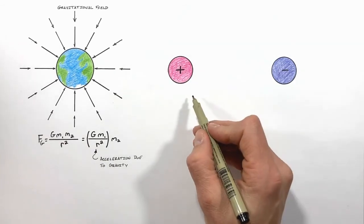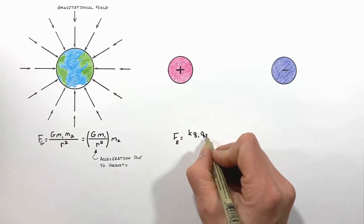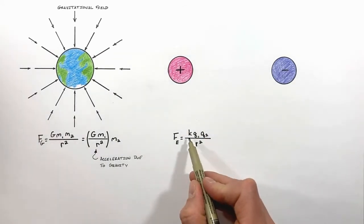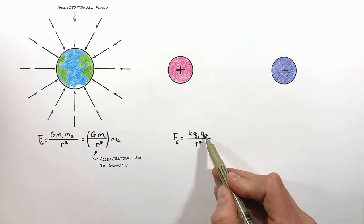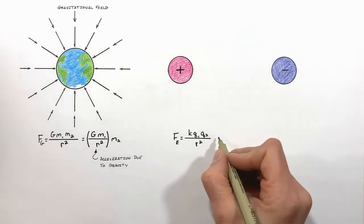Now you'll remember the electric force is given by Coulomb's law, where k is Coulomb's constant, q is the charge of each particle in question, and r is the distance between the particles. Much like with gravity, we can rearrange this equation.